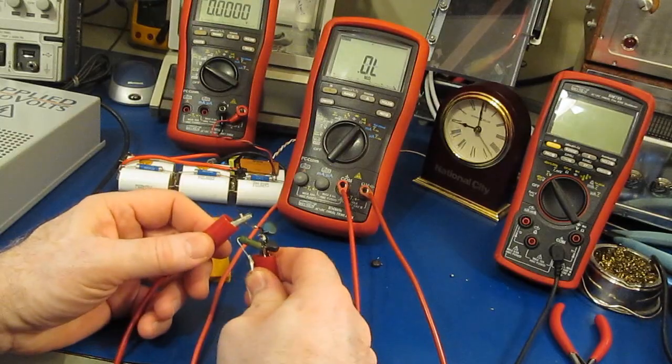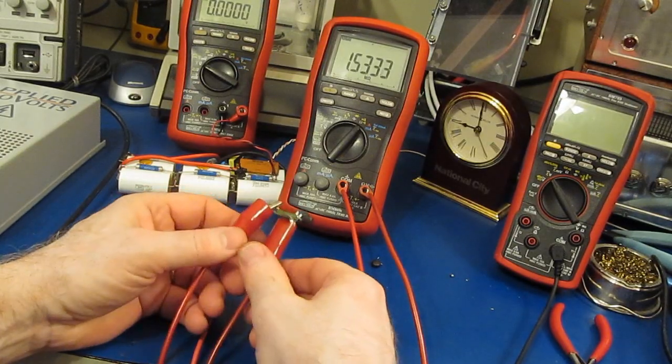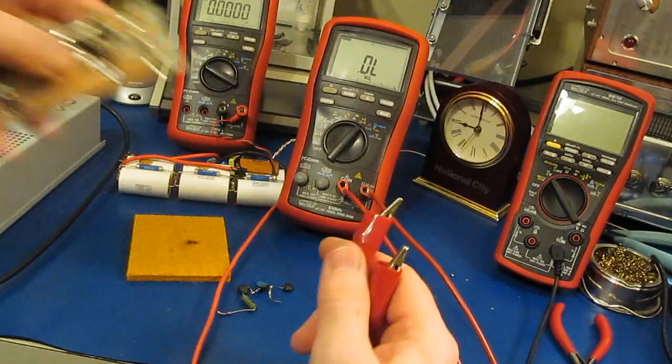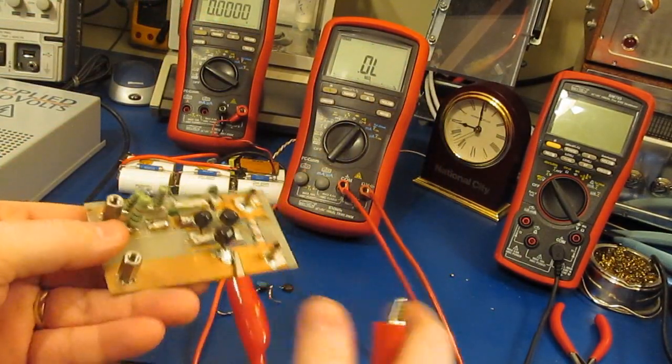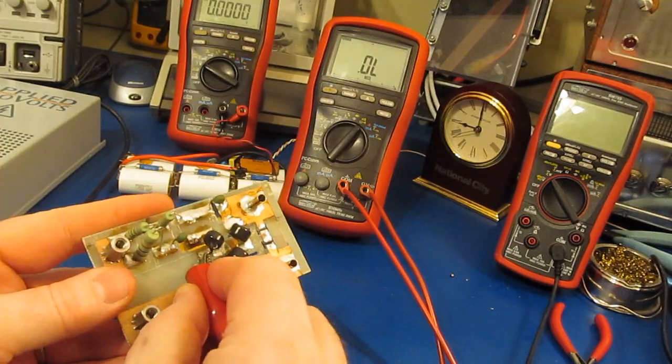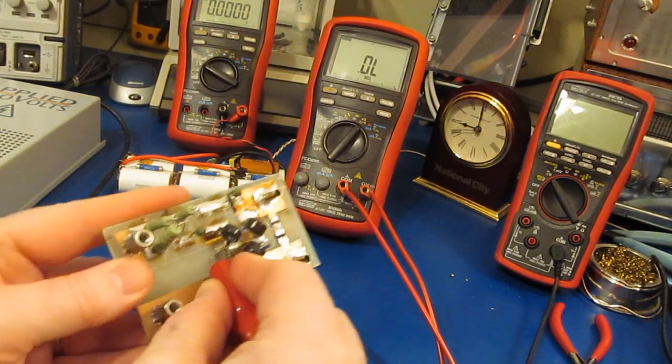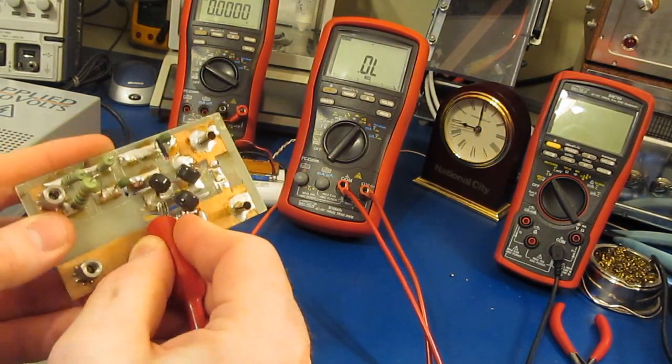But the MOV definitely has a lower resistance now. I've got this little test board. You may remember seeing this. Let's just look across one of the MOVs on it. And you can see this reads an open. This is what you would expect.